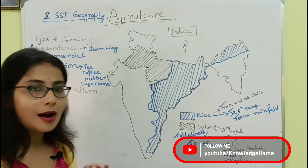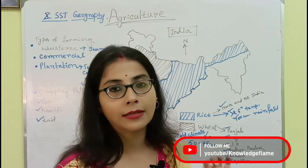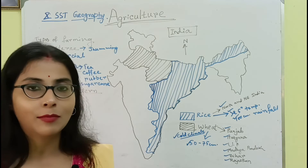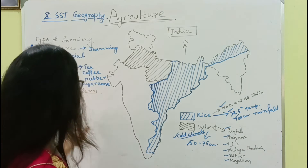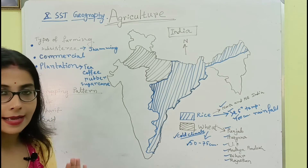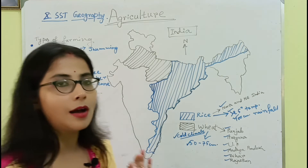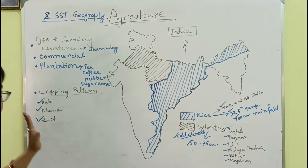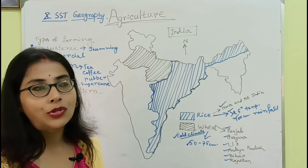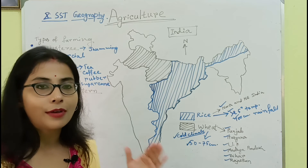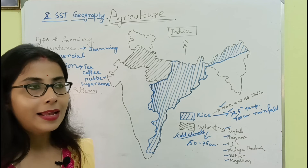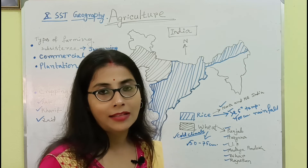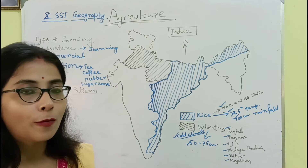Kharif crops are sown during the monsoon season and harvested before October. Rice is the most important Kharif crop of our country. Zaid crops are grown during the period between Rabi and Kharif crops. Examples include cucumber, muskmelon, jowar, bajra, and maize. All these crops hold great importance in our country.